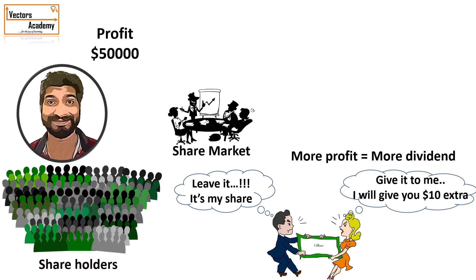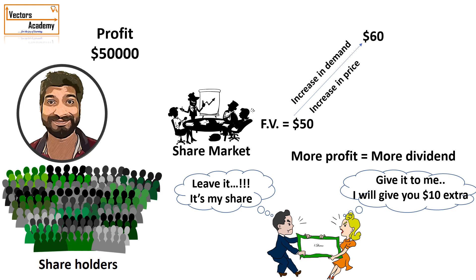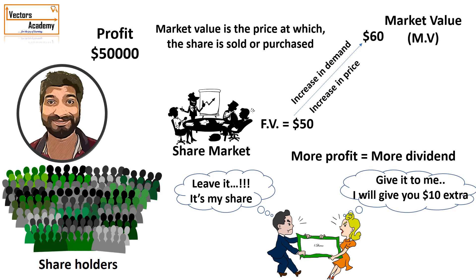Once the company is paying dividend, people try to acquire shares even if they have to pay extra. So the face value of fifty dollars may rise to sixty dollars — that is called the market value. The market value is the value at which the share is purchased or sold. The increase in price from the face value to the market value is called the premium, which in this case is ten dollars.